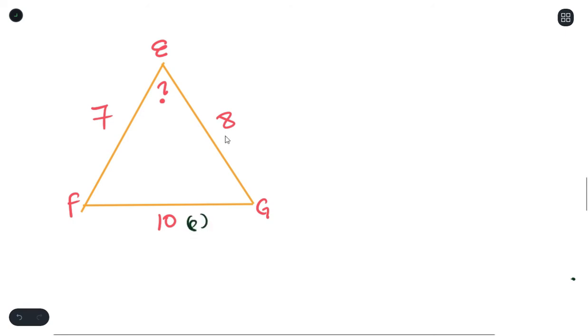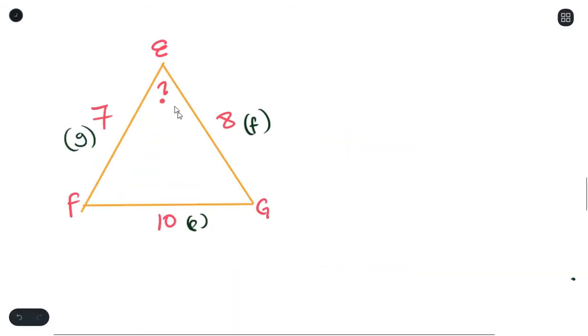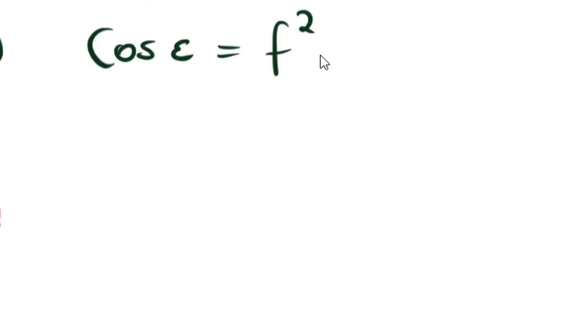we understand that this here will be small e, this will be f, and that there will be g. The formula we use for this, since we're trying to get E, cos E, it's going to be... So all we just need to do is substitute.